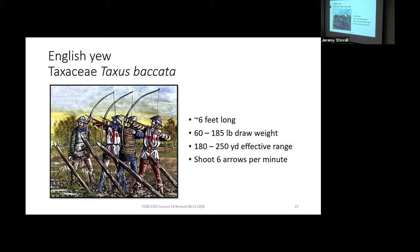One of the most famous historical uses of English Yew is the Welsh or English longbow. These bows helped end the age of knights in armor — once developed, the longbow could pierce through plate armor. The bows were about six feet long with draw weights between 60 and 185 pounds, which is extraordinary compared to modern recurve bows at 45–50 pounds. They had an effective range of 180 to 250 yards and archers could shoot six arrows a minute, significantly changing warfare in the United Kingdom.